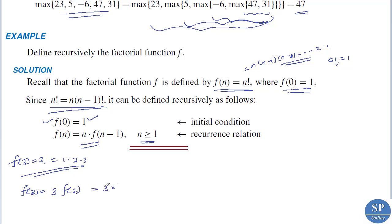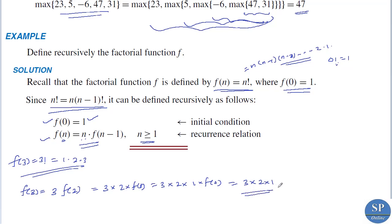Then f(2) = 2 × f(1), so f(3) = 3 × 2 × f(1). And f(1) = 1 × f(0). Since f(0) = 1 by the initial condition, we have f(3) = 3 × 2 × 1 × 1 = 6, which is 3!. In a similar way we can find f(2) = 2!, f(4) = 4!, and so on.